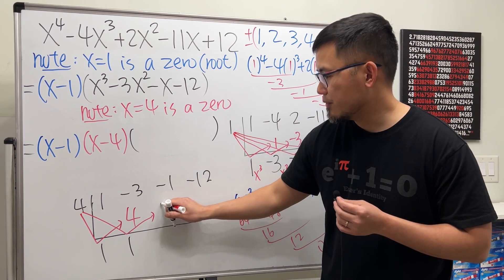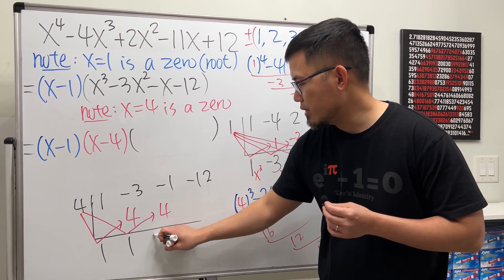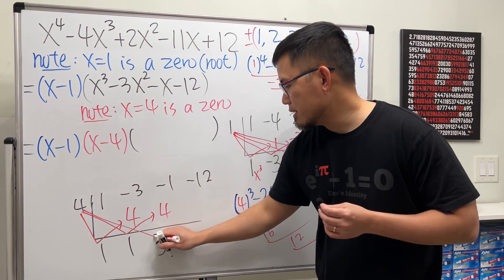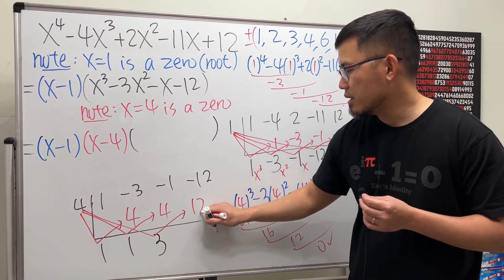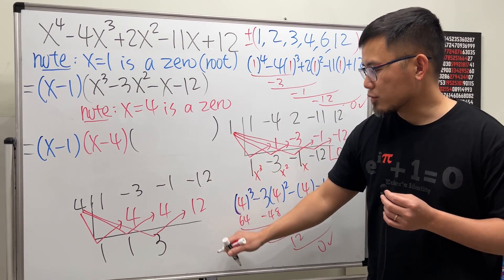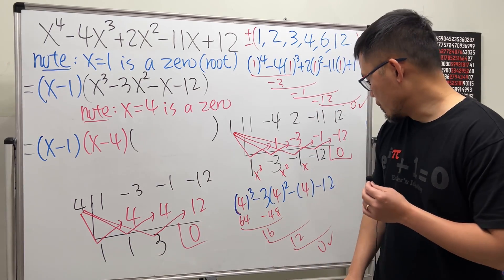Put it here, and then we get 3. Continue, this times this is 12, put it here. Negative 12 plus 12, we end up with zero, so all good.